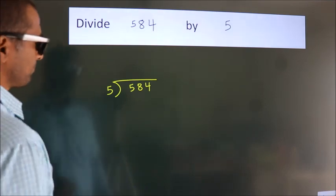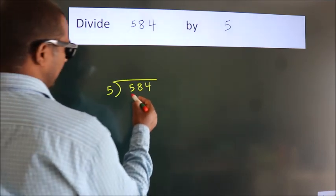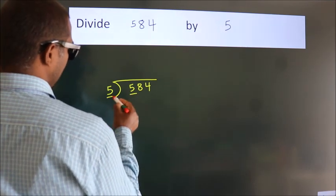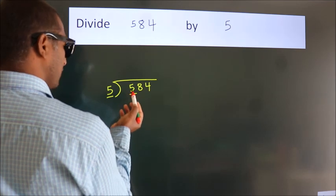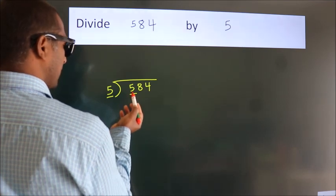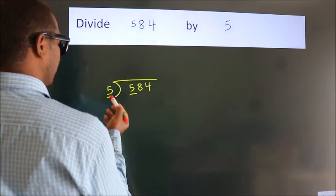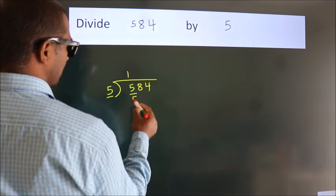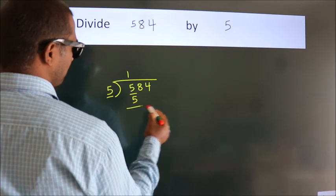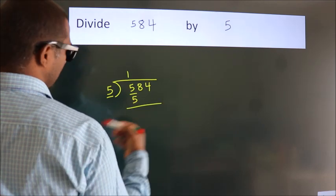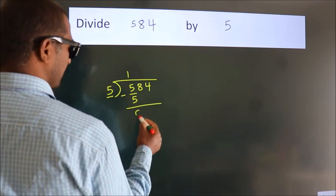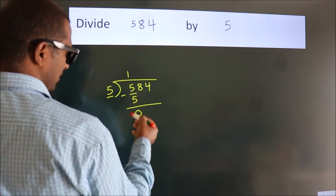Next, here we have 5, and here 5. When do we get 5 in the 5 table? 5 once is 5. Now we should subtract. We get 0.